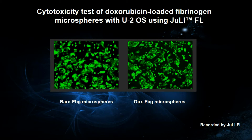The GFP-expressing U2-OS cells were pre-cultured for 36 hours until the confluency was at 45%. Doxorubicin-loaded Fibrin Microspheres and Doxorubicin-free bare Fibrin Microspheres were added to the GFP-expressing U2-OS cells, and cells were incubated for another 48 hours.